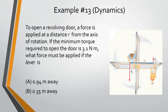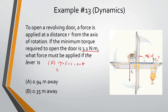To open a revolving door, a force is applied at a distance r from the axis of rotation. If the minimum torque required to open the door is 3.1 newton-meters, what force must be applied if the lever arm is 0.94 meters away? Torque equals force times radius times sine of theta. Sine of 90 is 1, so: force equals 3.1 divided by 0.94, which gives us 3.3 newtons.